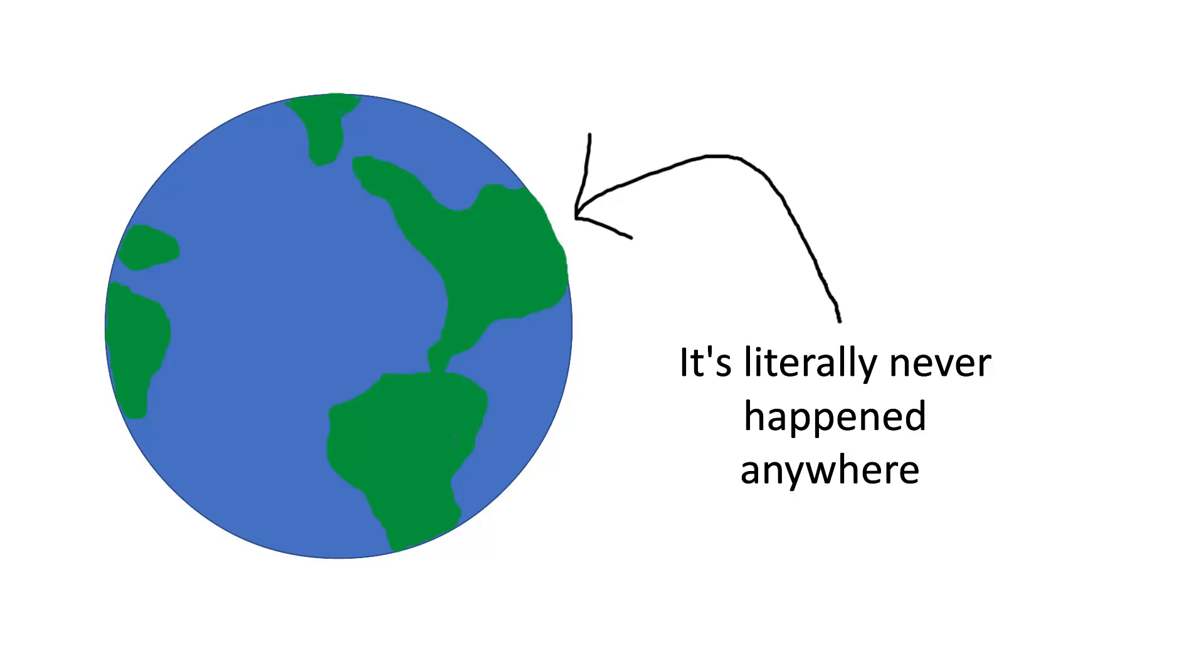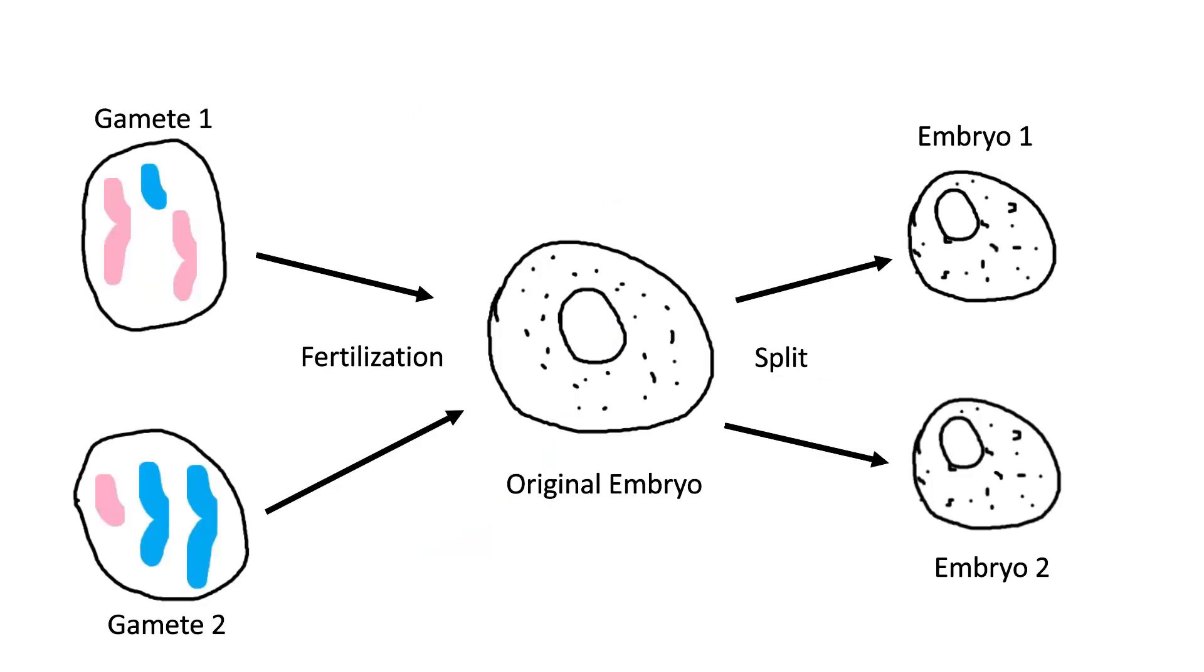It would be like flipping 46 coins and each coin landing on the same side when you flip them a second time. Keep in mind that this does not apply to identical twins, as they are caused by a phenomenon where an embryo splits after fertilization.